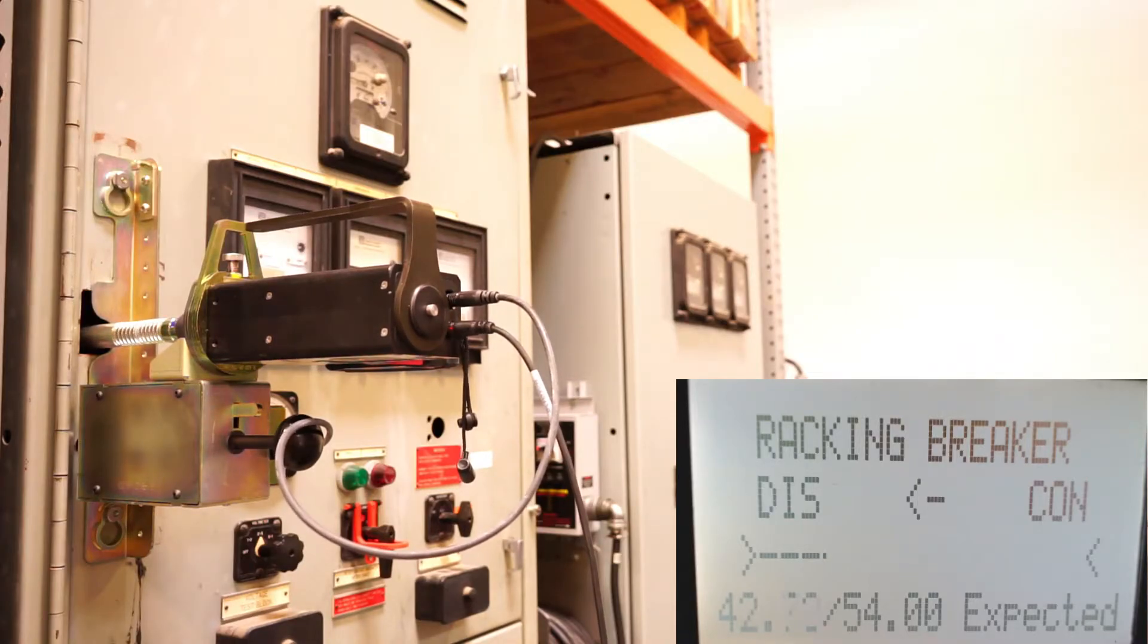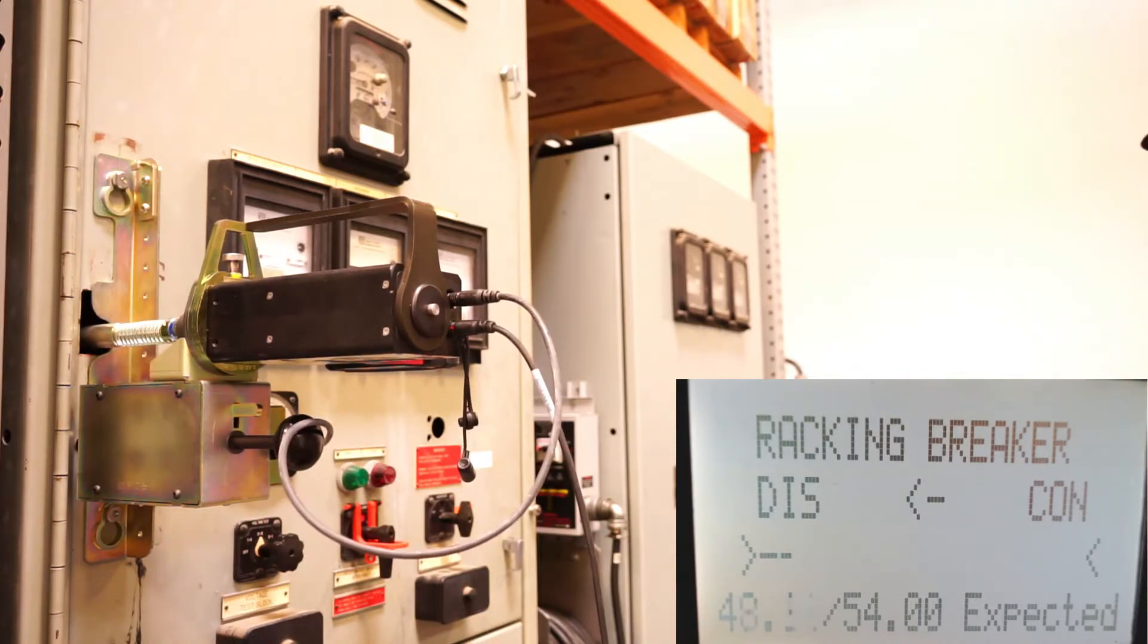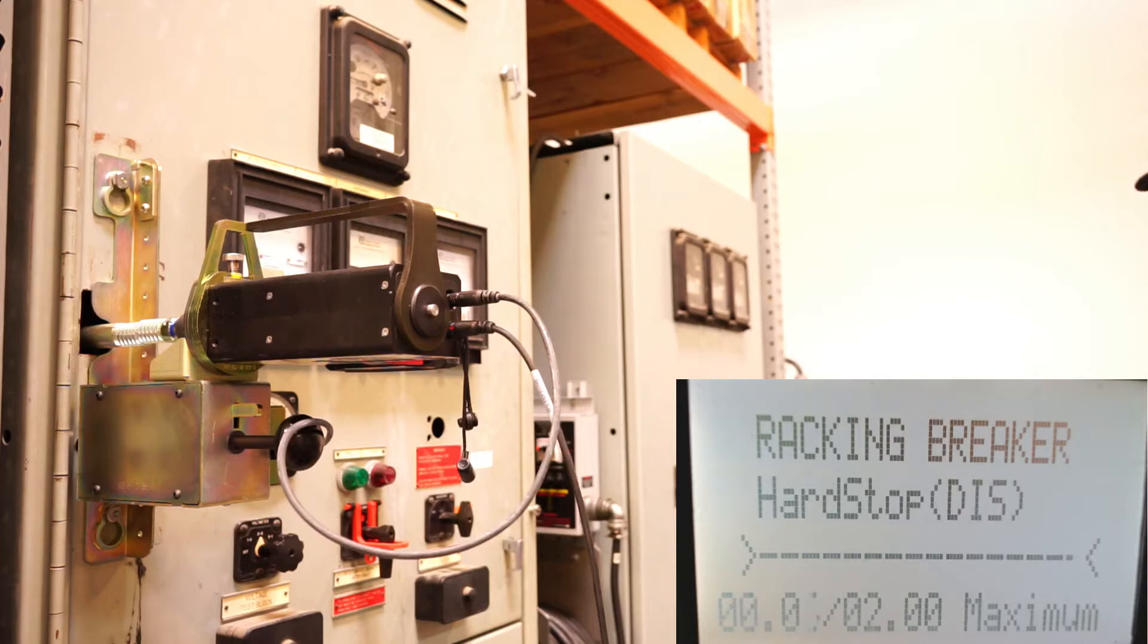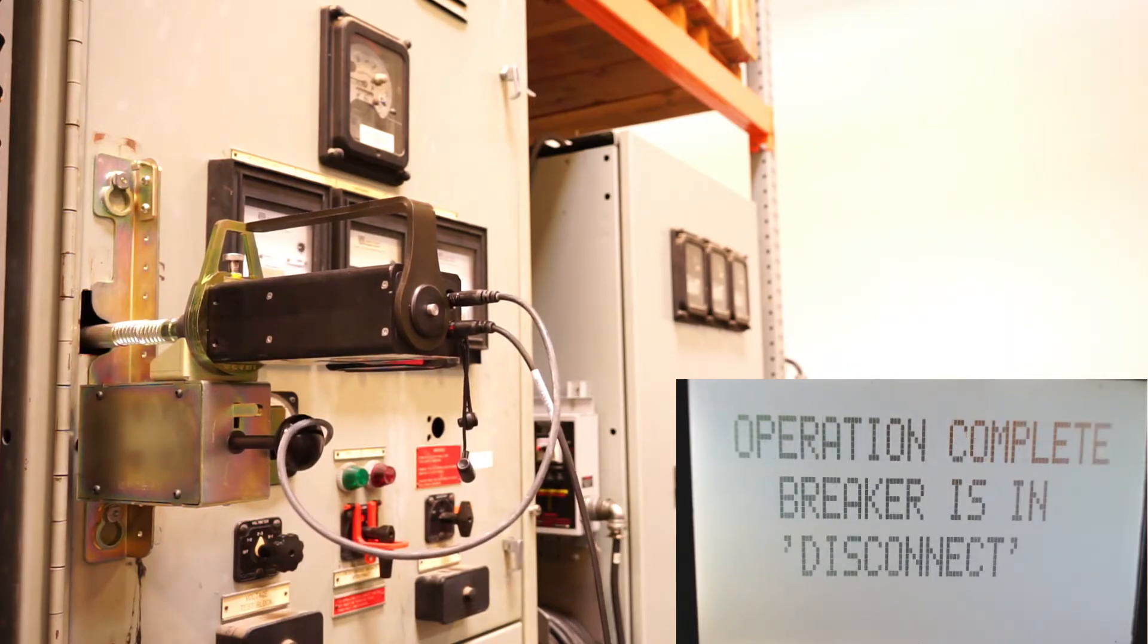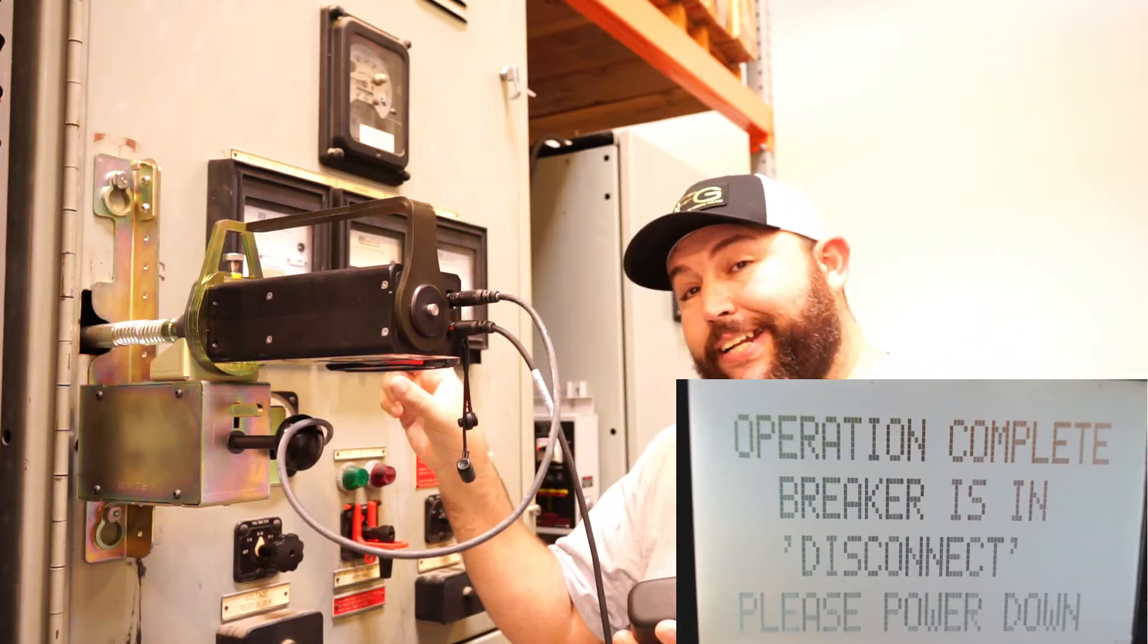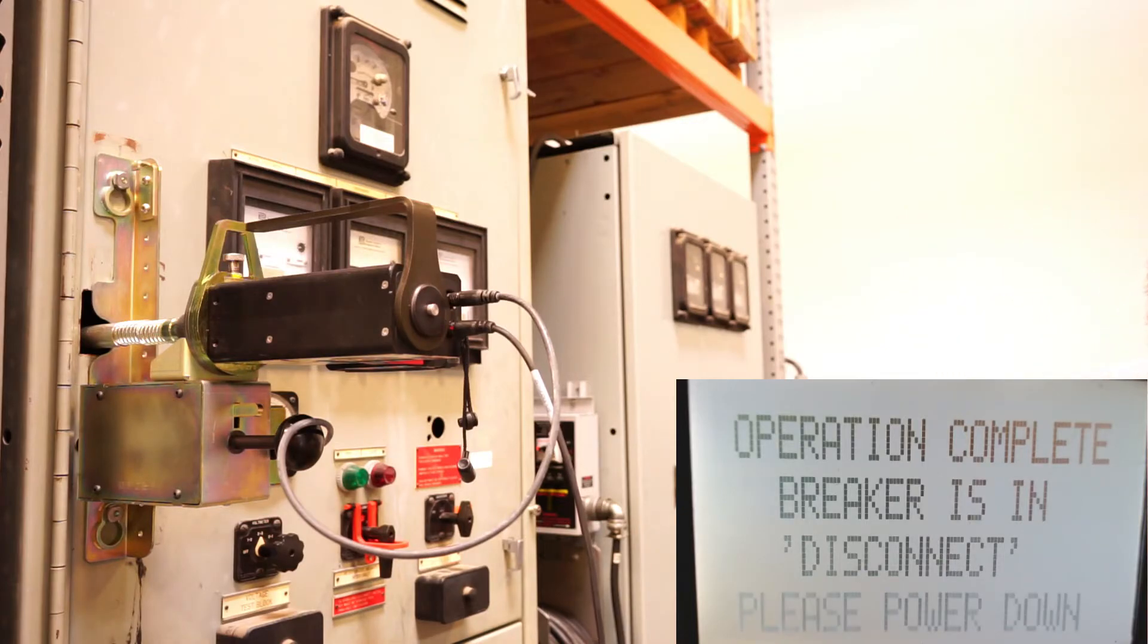So now you'll see when we come to the end of racking here because we're monitoring turn counts instead of just slamming into the hard stop at the end we're actually going to slow down at the end and then it's going to turn at a much slower speed looking for that hard stop and disconnect. So now we've slowed down and you can see two turn maximum so it felt the hard stop there and then it actually turns back in a little bit to take the load off the racking mech.